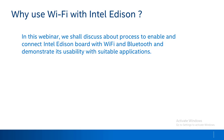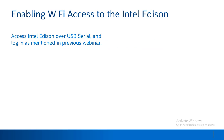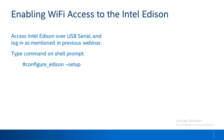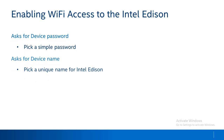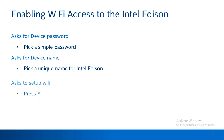In today's webinar we would understand the process to enable and connect Intel Edition boards to Wi-Fi or the onboard Bluetooth module, and understand its practical implementation using suitable case studies. To enable Wi-Fi access, first connect to Intel Edition board over serial and log in. Then type the given command on the shell prompt to access Intel Edition in configuration mode, where you can set a password, device name, and connect to a suitable Wi-Fi network.